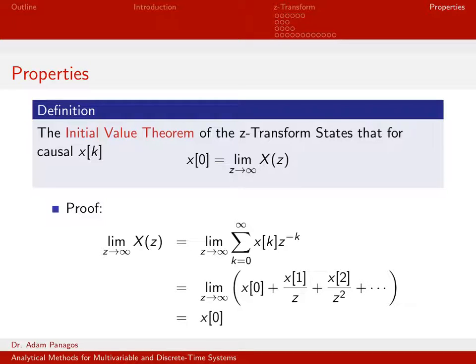But we didn't do any type of initial value theorem property for the discrete-time Fourier transform. Let's go ahead and actually prove this one. So the claim is, if we take the limit as z goes to infinity of x of z, we should get out x of 0. So it's actually very easy to see just by the definition. So the limit as z goes to infinity of x of z is the same thing as the limit as z goes to infinity of this sum right here because this is x of z. For this property, I am assuming that x of k is a right-sided signal.